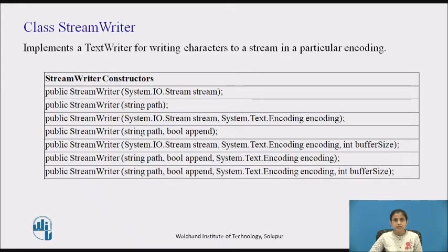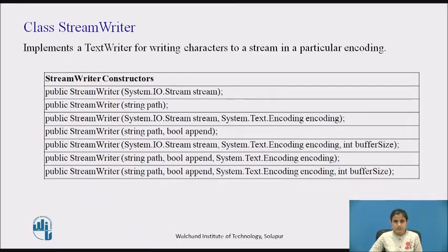First we'll see the StreamWriter class. It implements a text writer for writing characters to a stream in a particular encoding. Encoding is the process of transforming a set of Unicode characters into a sequence of bytes, and decoding is the process of transforming a sequence of encoded bytes back into a set of Unicode characters. The Unicode standard assigns a code point — that is, a number — to each character in every supported script.